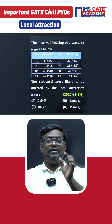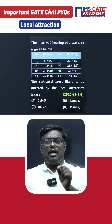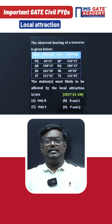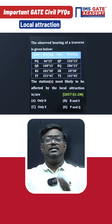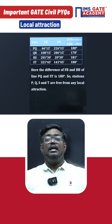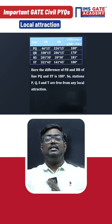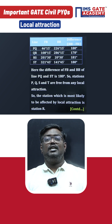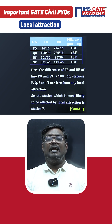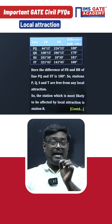Here is a GATE question. They have given the bearings of PQ, QR, RS, and ST, and are asking what are the stations affected by local attraction. There is a logic here: if back bearing minus fore bearing is equal to 180°, then we say that no stations are affected by local attraction.